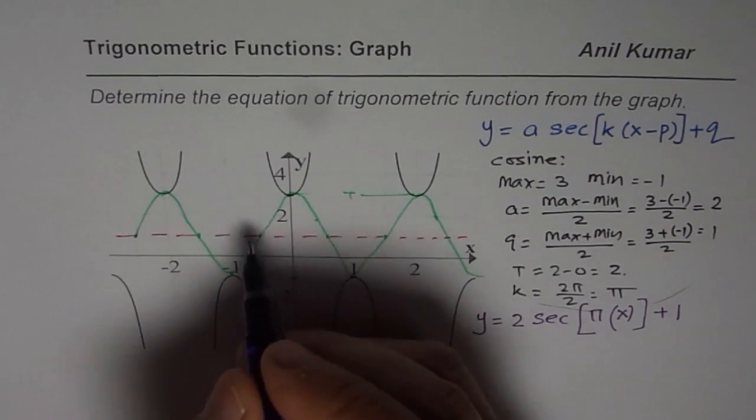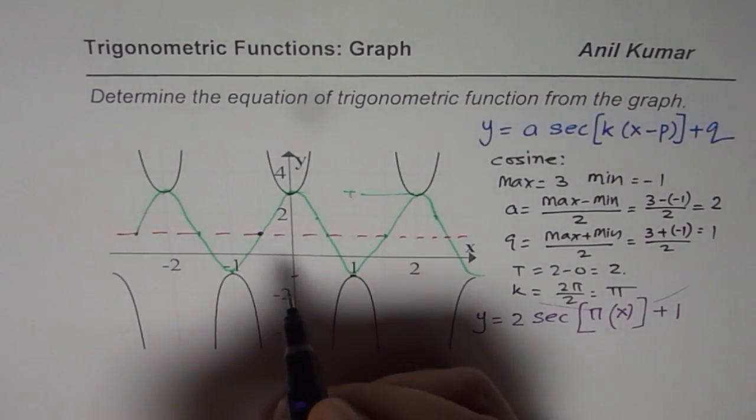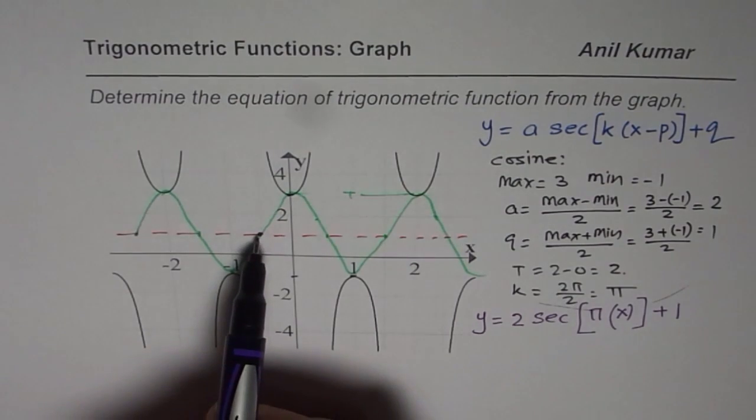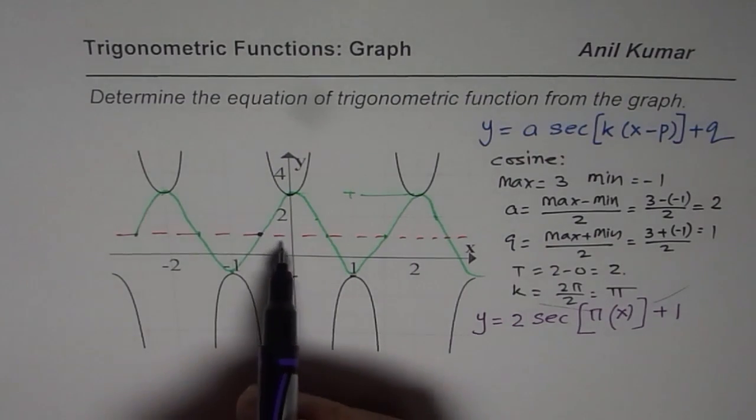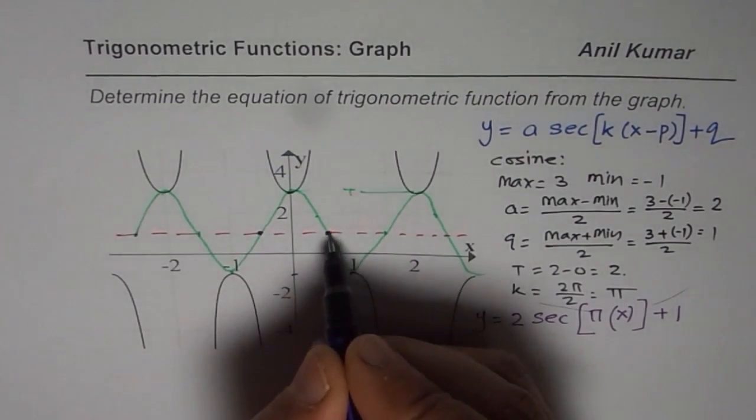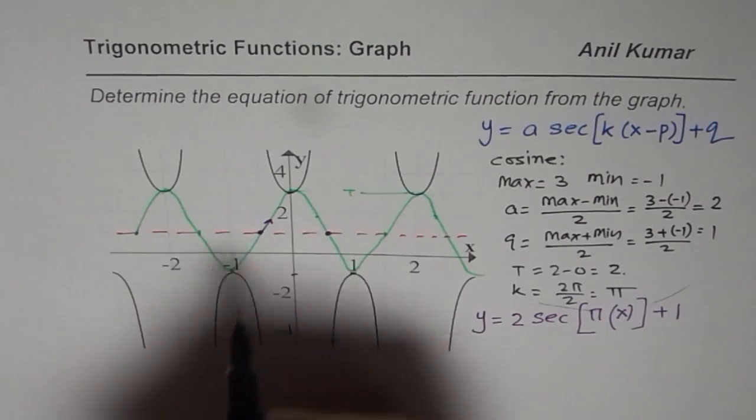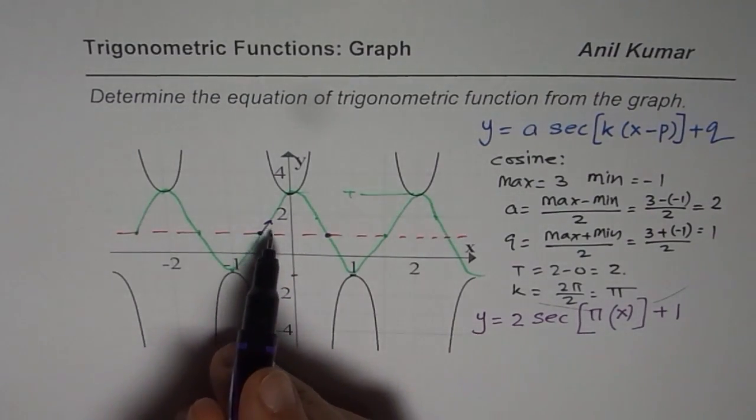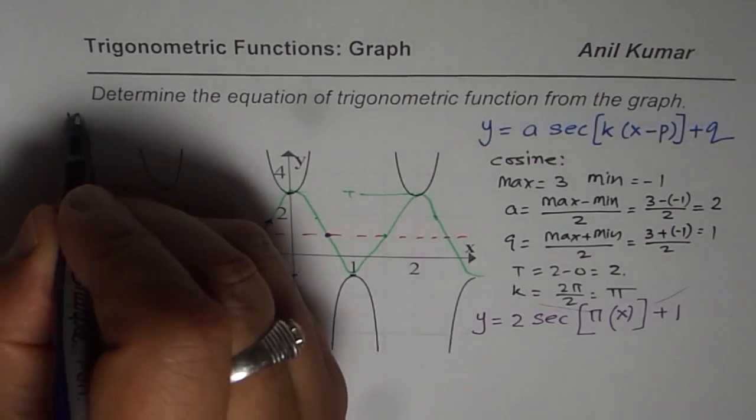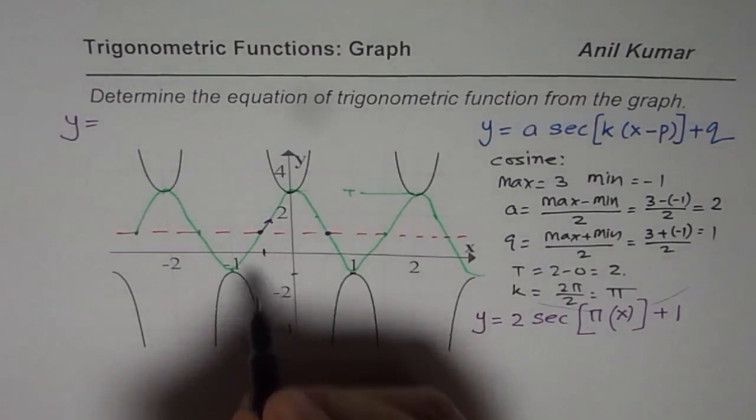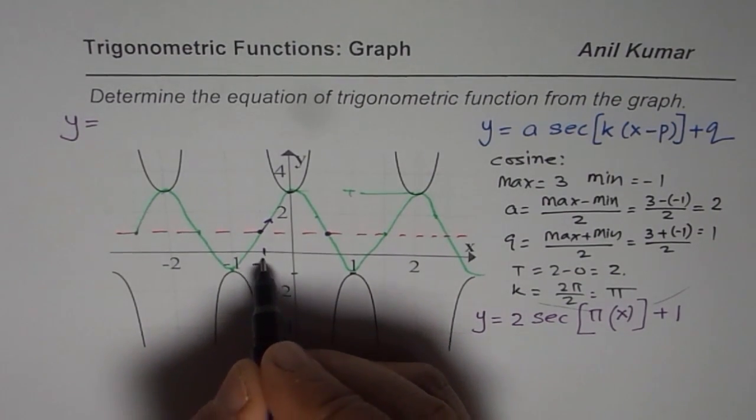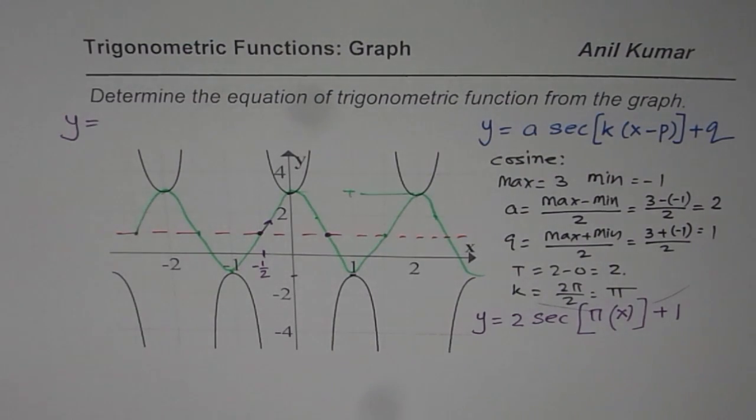Now if you have to write a cosecant function, in that case we will consider the sine function which starts from here. We could consider from here or from here, not there because it has to be rising. Now for a cosecant function let me write down an equation here. There will be a phase shift since that is the point which is at minus half, minus 0.5 you can write.